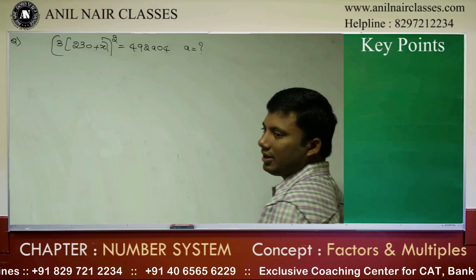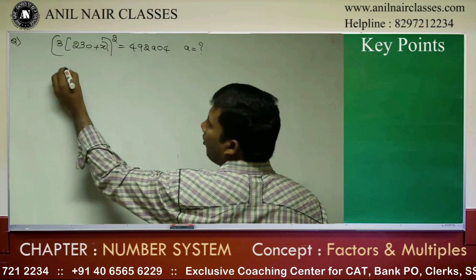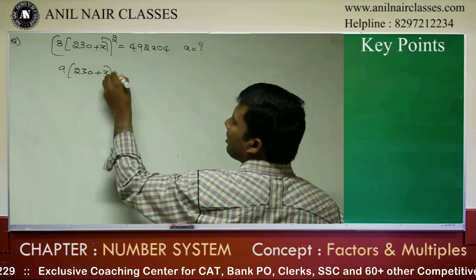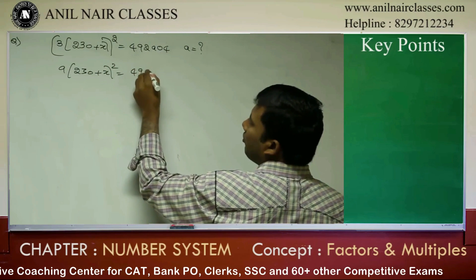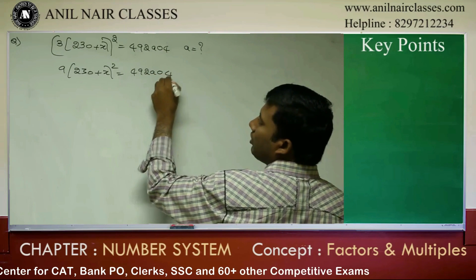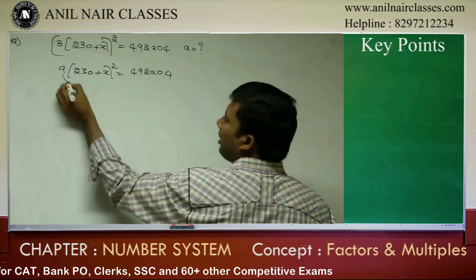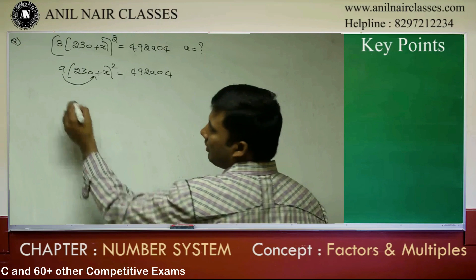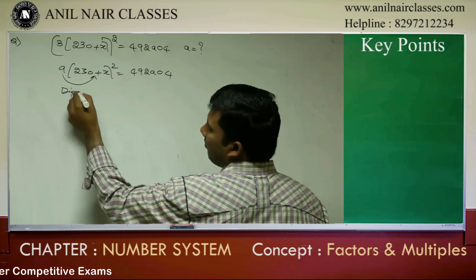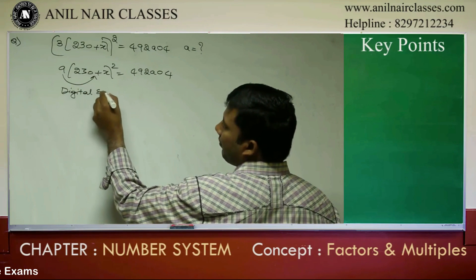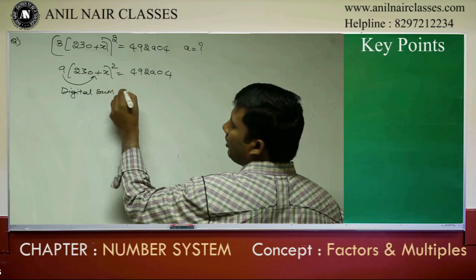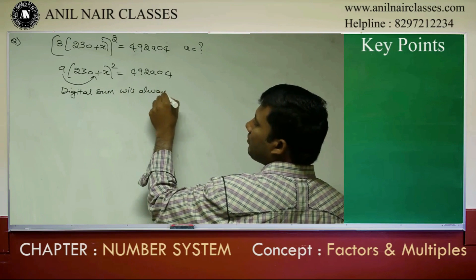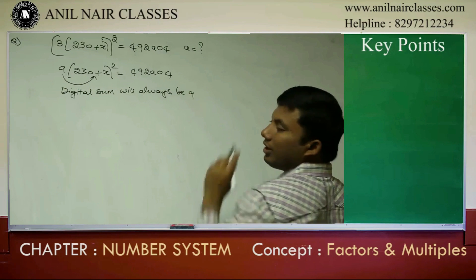See here. If I multiply any number by 9, what will be the digital sum? 9. If you multiply any number by 9, the digital sum will always be 9. Digital sum will always be 9.